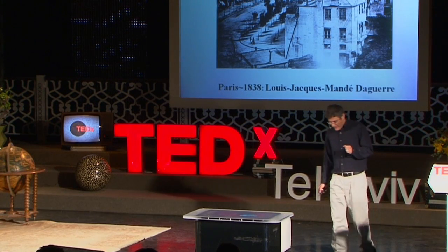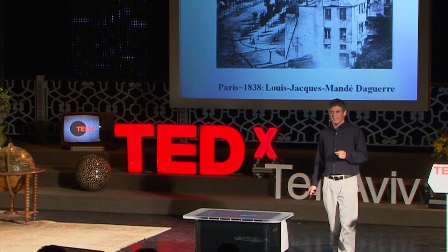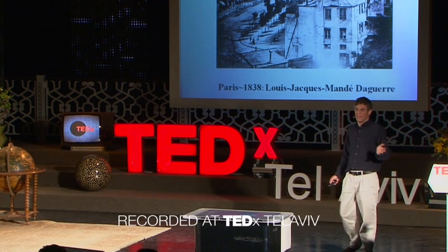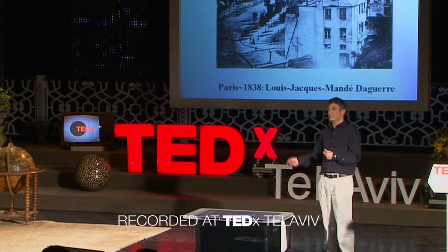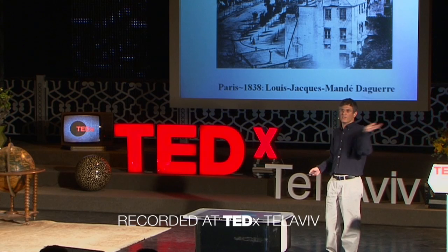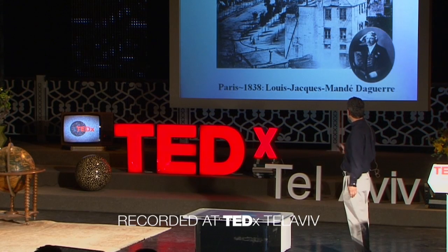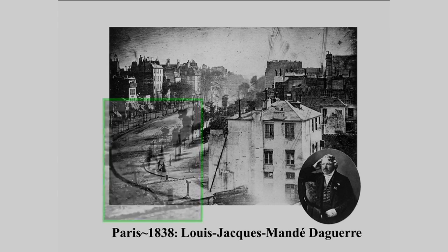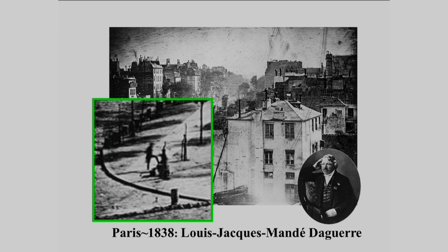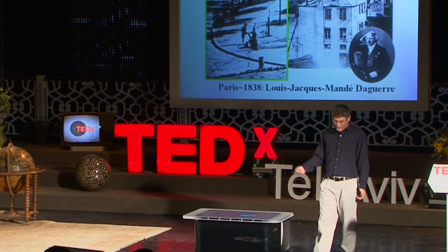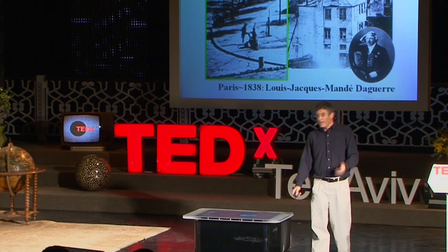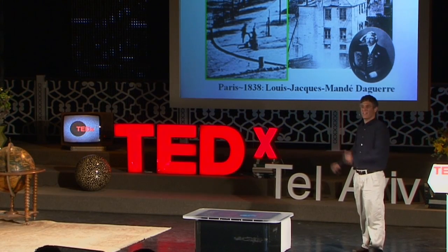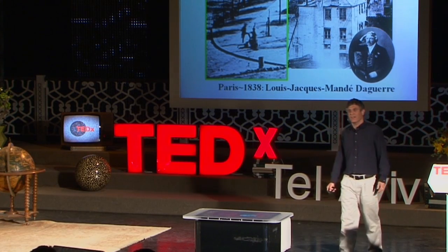In those days, it took around 10 minutes to take one photograph. So everything that moved, like carriages and people, was blurred away. But if you look closely at the bottom right corner, you can see this person standing there shining his shoes. That's the first person ever photographed.